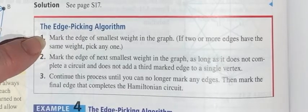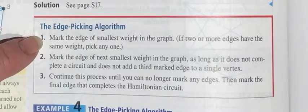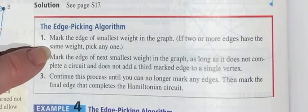You mark the edge of the smallest weight in the graph. So you look through the whole graph and you find the shortest one. If there are two or more edges that have the same weight, pick one.